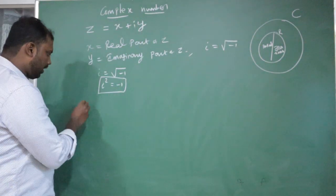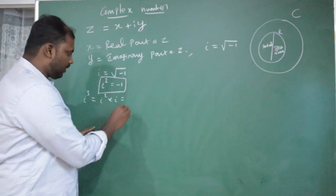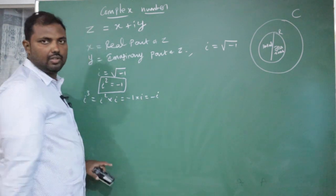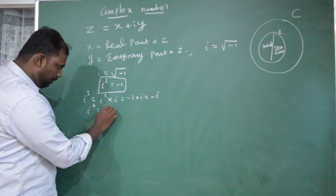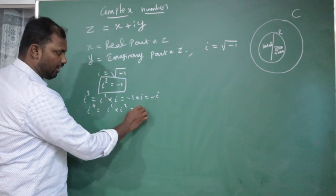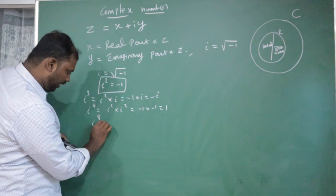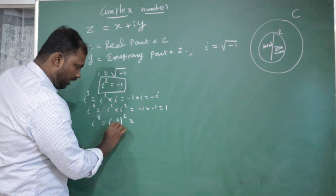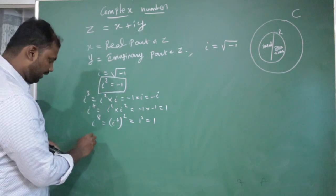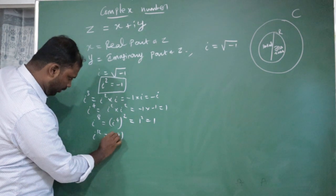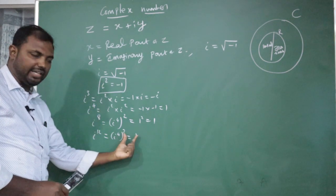i squared equals minus 1. i cubed equals i squared times i, which is minus 1 times i, so i cubed equals minus i. i to the power 4: i squared times i squared equals minus 1 times minus 1, which equals 1. So i to the power 4 equals 1. i to the power 8 equals (i to the power 4) squared, which is 1 squared, equal to 1. i to the power 12 is (i to the power 4) cubed, which is also 1. So any power that is a multiple of 4 gives the answer 1.